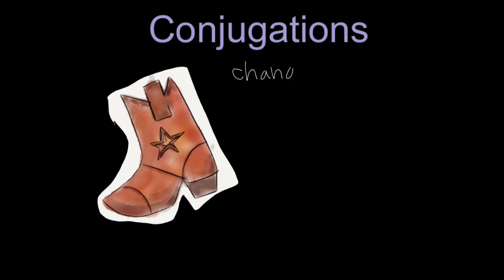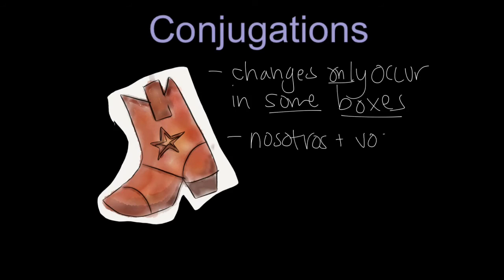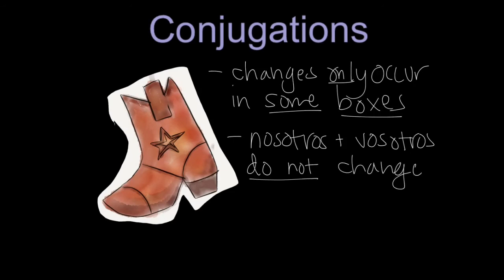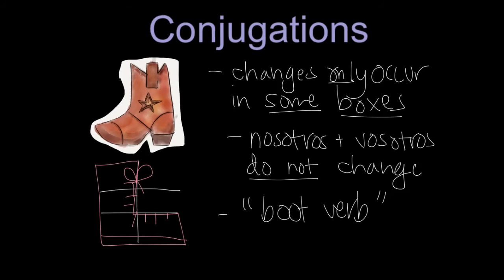Let's talk about conjugations. The key thing to keep in mind is that stem changes only occur in some boxes of your conjugation chart, not all of them. Nosotros and vosotros do not have stem changes at all — their spelling will not change. That's why these are nicknamed 'boot verbs': if you draw the conjugation chart, the shape of where the changes occur falls in a boot-like pattern.